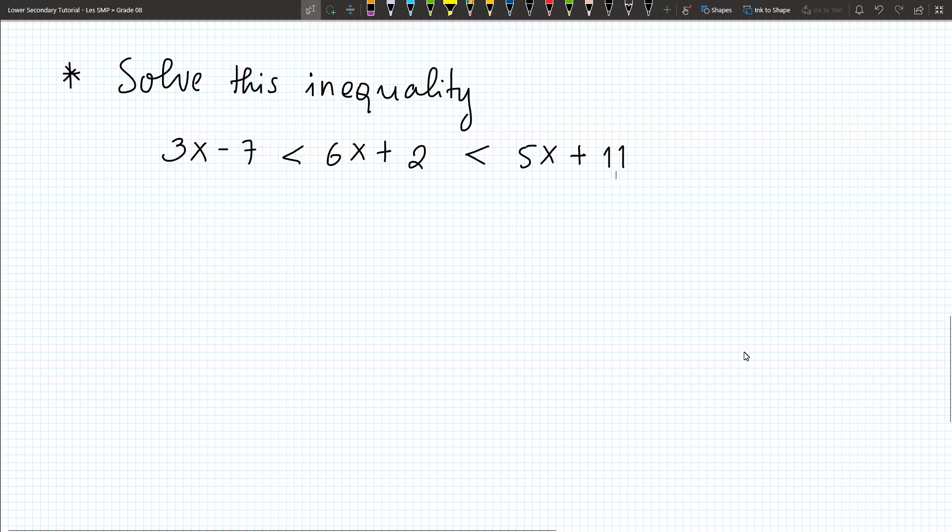Now, we have the question: solve this inequality. 3x minus 7, 6x plus 2, 5x plus 11. And the middle term should be bigger than the term on the left and the term on the right.